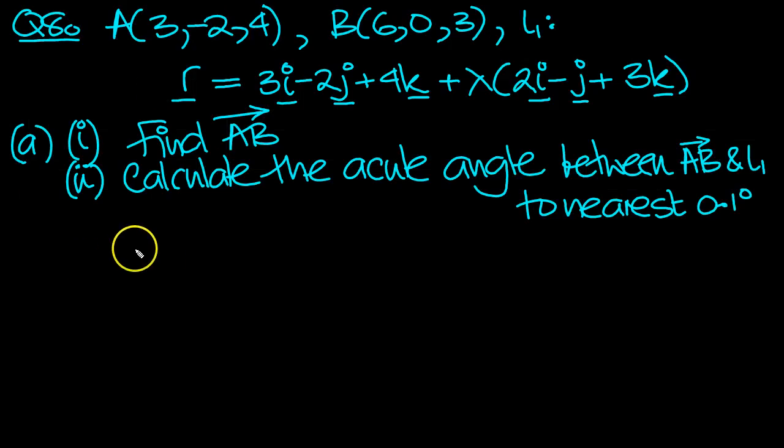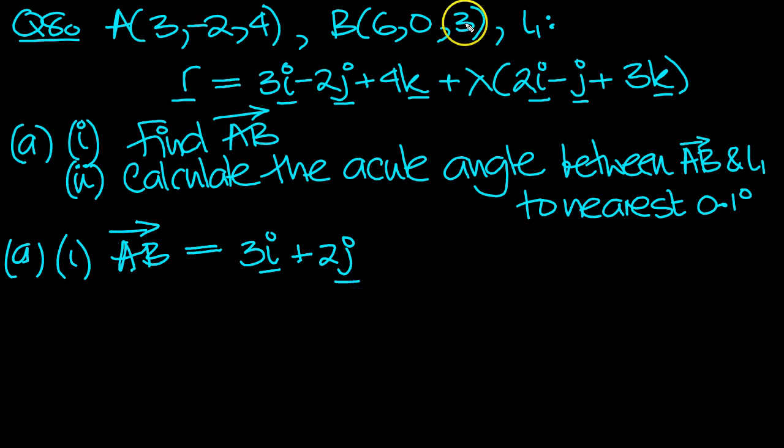So let's have a look at this. Part (a)(i), the vector AB. I'm going to write it in vector form IJK. So B minus A will be 6 minus 3 is 3i, plus 0 minus (-2) is 2j, and then 3 minus 4 is -1k. So there's the vector AB.